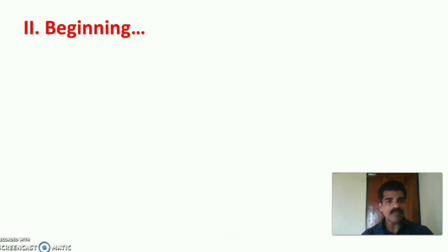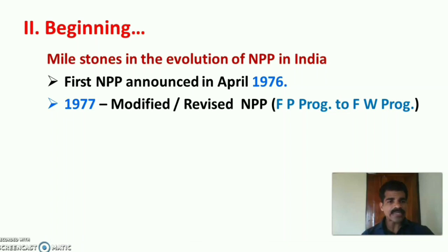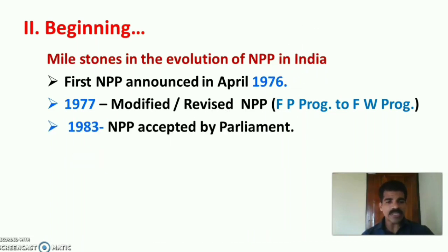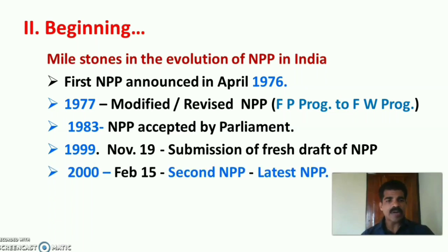The beginning of National Population Policy: The first national population policy was announced in April 1976. In 1977, this policy was modified or revised, where the family planning program was replaced with the family welfare program. In 1983, the national population policy was accepted by parliament. A fresh draft was submitted on 19th November 1999, and the government of India announced the second national population policy on February 15th, 2000.